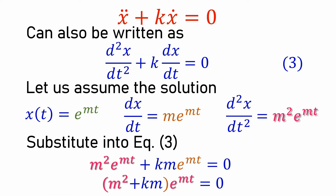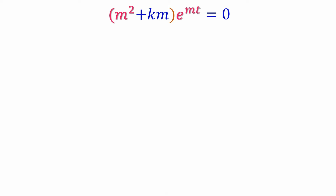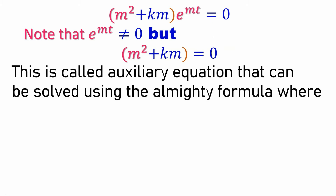One thing we should bear in mind is that e^(mt) is not zero — it is our assumed solution and can never be zero. Therefore it must be that m² + km = 0. This expression is very simple; we are familiar with the quadratic formula, and this expression here we call the auxiliary equation.